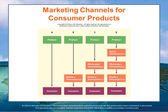In Channel B, the product goes from the producer to a retailer who then sells to the consumer. This could be a website with multiple products operating as an online retailer, or more commonly local retailers who sell locally produced goods — like a farmer's market that buys and resells products. This channel is often used for college textbooks, automobiles, and appliances.